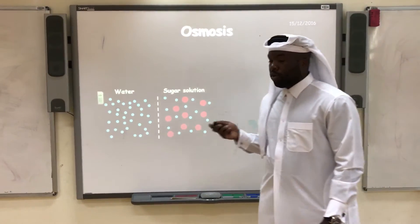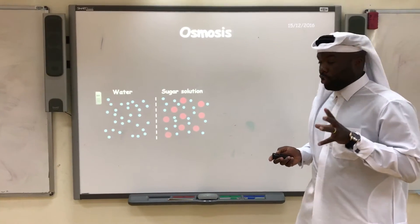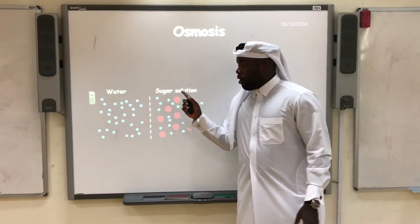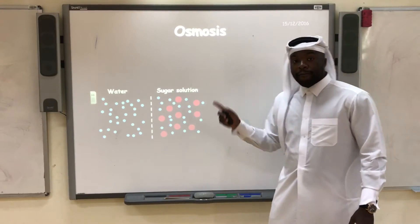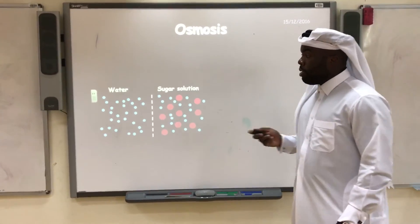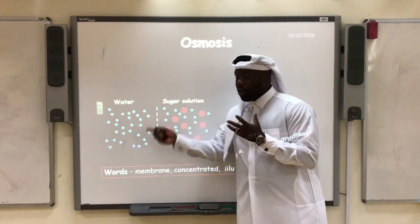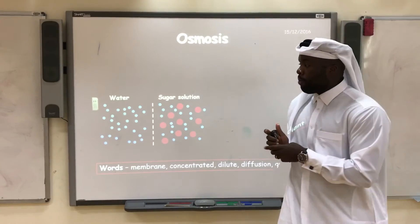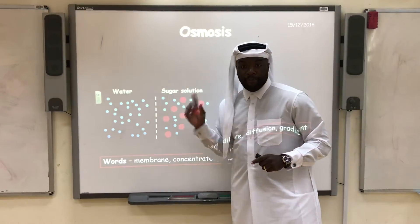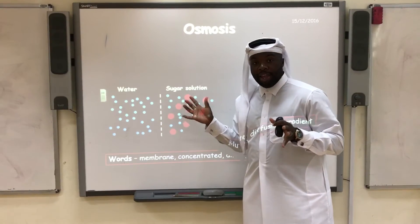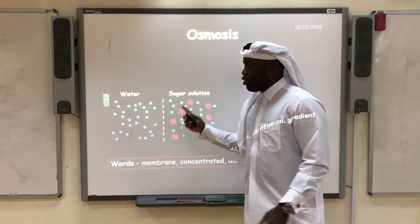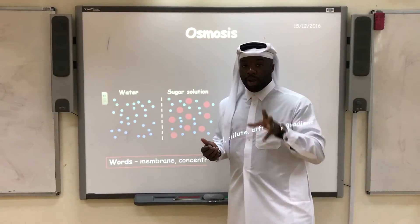So for your definition: osmosis is the diffusion of water molecules from a dilute area to a concentrated area through a partially permeable membrane. That partially permeable membrane part is really important, because it means it's through a membrane that only allows certain things through. When we talk about water molecules moving from a dilute to a concentrated area, that doesn't mean particles can't move back and forth, because water molecules can move freely through this partially permeable membrane. But there is a net gain of water molecules in the concentrated area until equilibrium is reached.